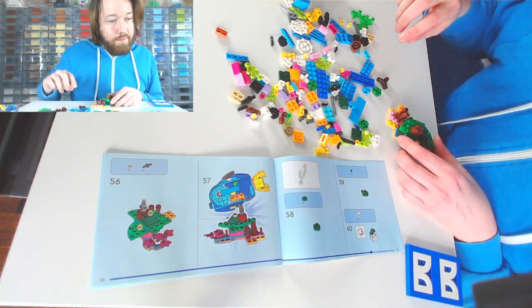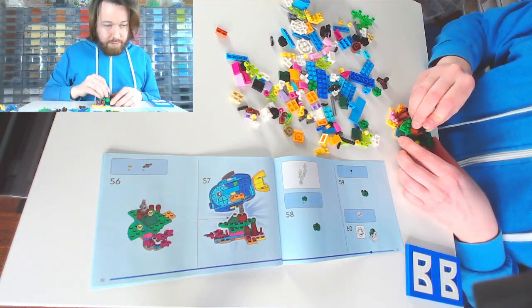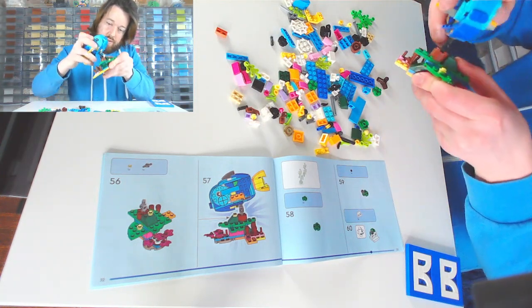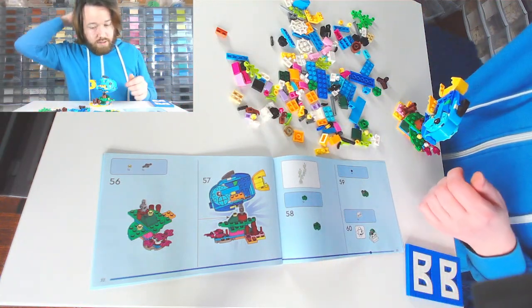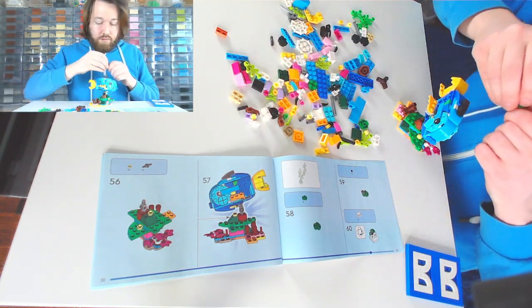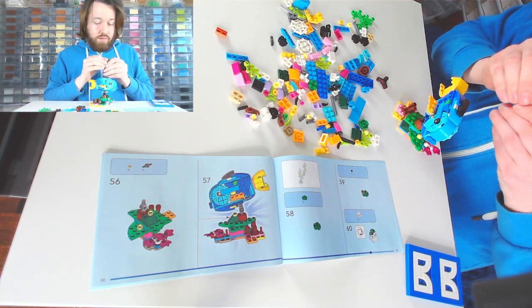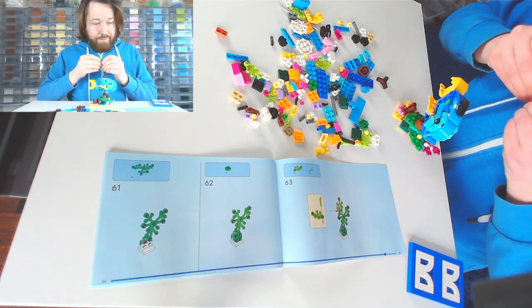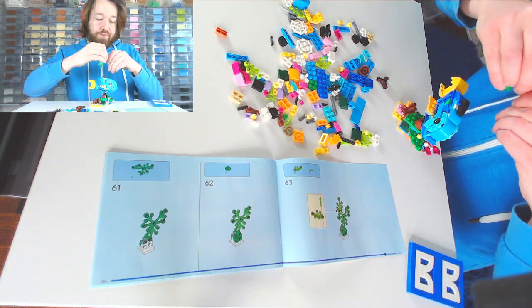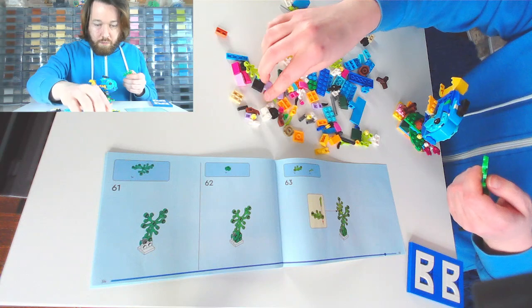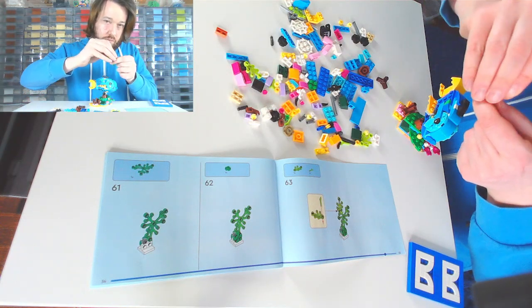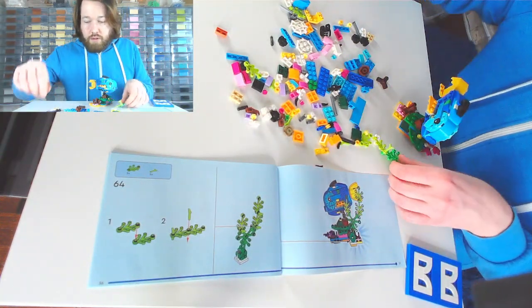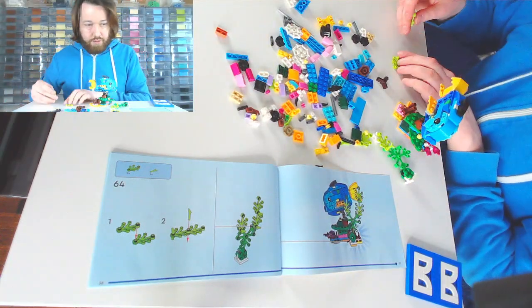So you're going to take a technic piece and put it here and then take the fish and stick it on here. It's nice. And then I'm going to do that. Oh, I guess this is just extra plants. Okay. So we're just making some extra vegetation, which is nice.